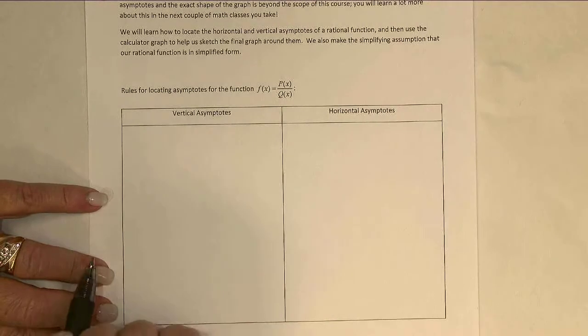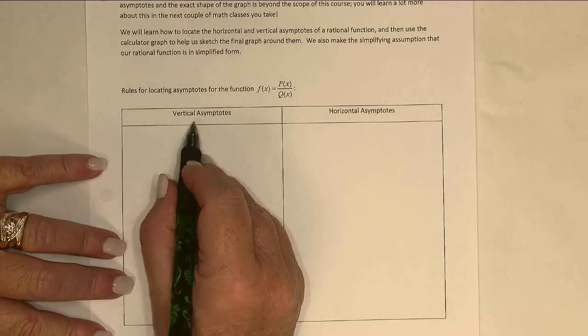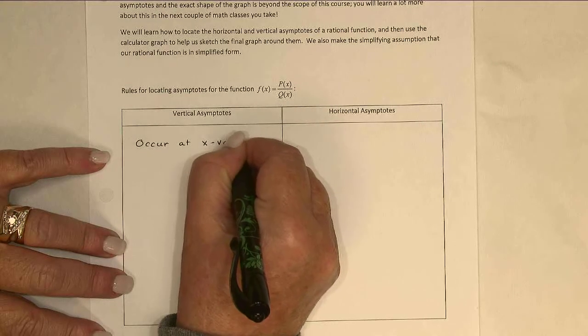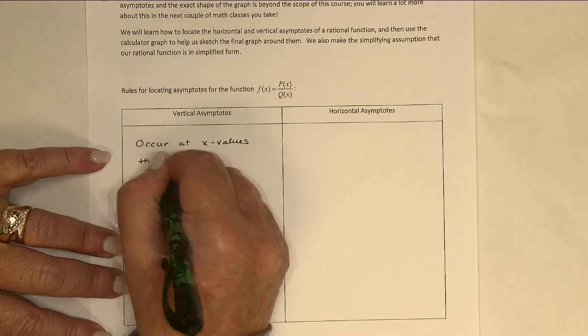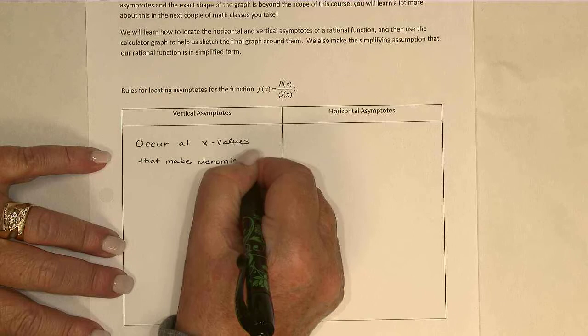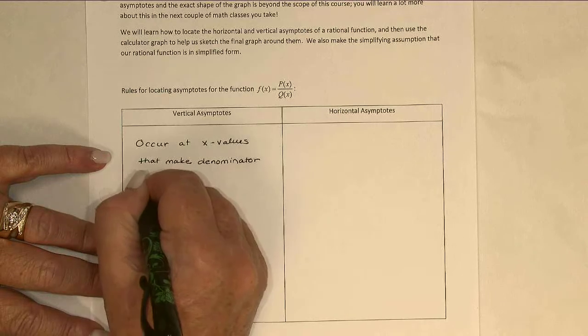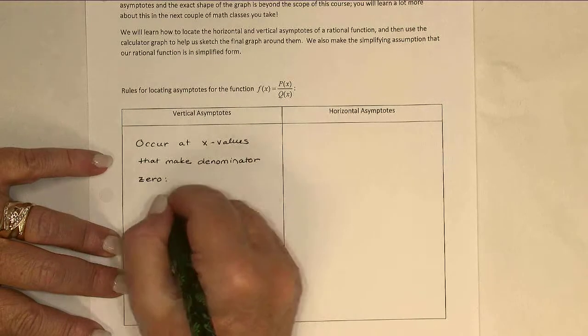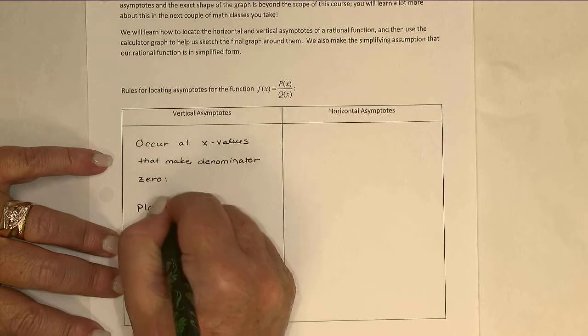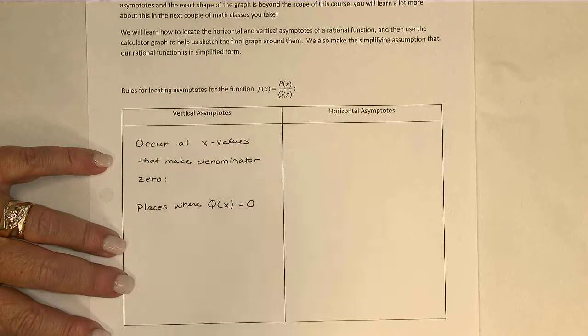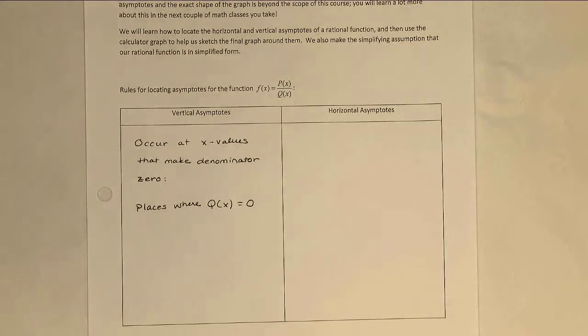So it's the places that are excluded from the domain that end up giving us the vertical asymptotes. If I say that more generally here, then vertical asymptotes occur at x values that make the denominator 0. That is, places where q of x equals 0. So those aren't too bad to find. It's really just like finding domain all over again, which we have done already.